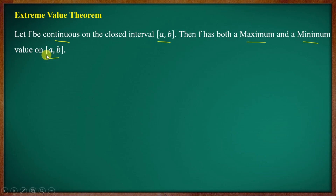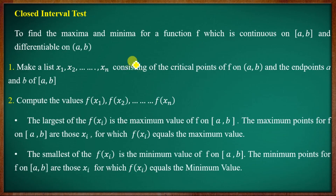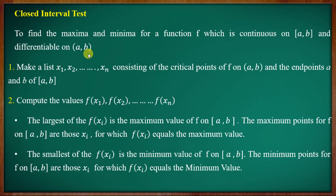For the Extreme Value Theorem, what is the statement? If f is continuous on a closed interval [a, b], then you start with the closed interval test. Once you get the method for the maximum and minimum value, it is called the closed interval method. If f has a maximum and minimum value on the closed interval [a, b], then for any x₁, this condition of x₁ is clear.